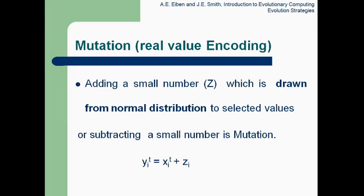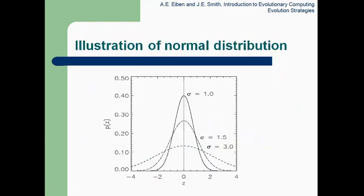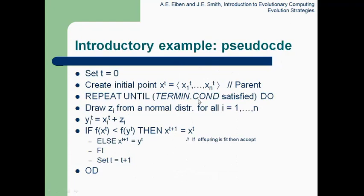Now, how is mutation done in evolutionary strategies? Mutation is done on the real value. For that, we have to add a small number z, drawn from the normal distribution, to the selected value xi. We can add or subtract the small number z from xi — this is called mutation. Here z is shown on the axis and can be added to xi.